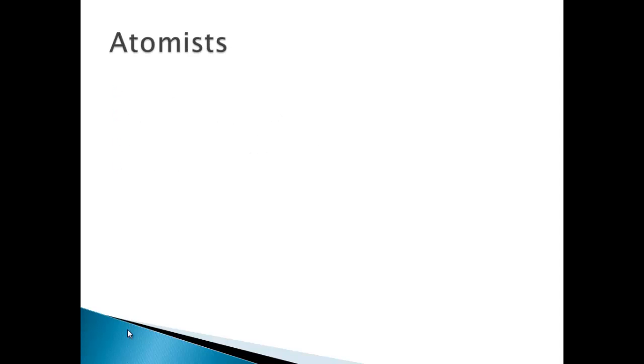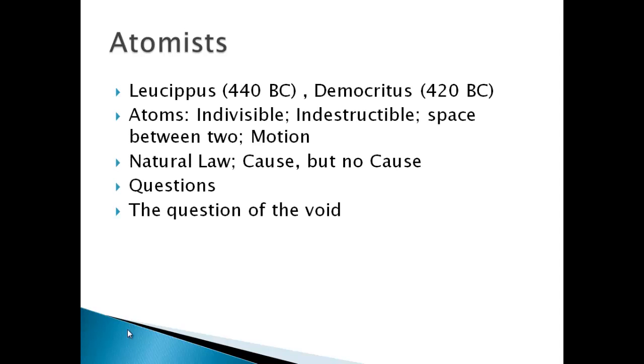Now the philosophers that are very well mentioned in science textbooks are the atomists. Atomists, of course, are people who first discovered the concept of the atom. The most well-known one is Democritus, but there's one more, Leucippus. Leucippus was born in 440 BC when Democritus was slightly later in 420 BC. They both stated that atoms were indivisible. Of course you can divide them physically, but atoms themselves were indivisible, indestructible. They can't be destroyed and there's spaces between two and they're also in constant motion.